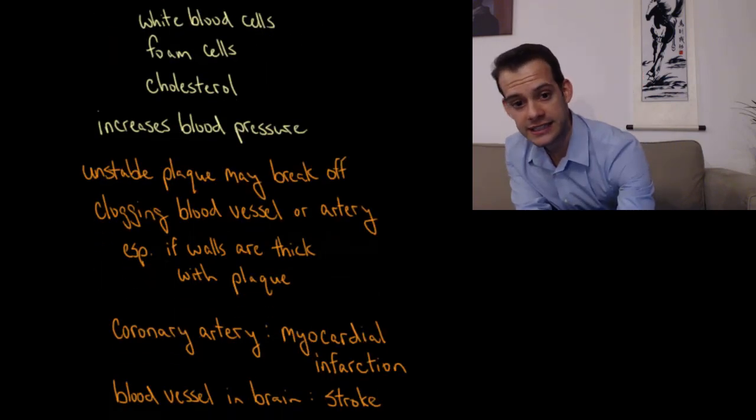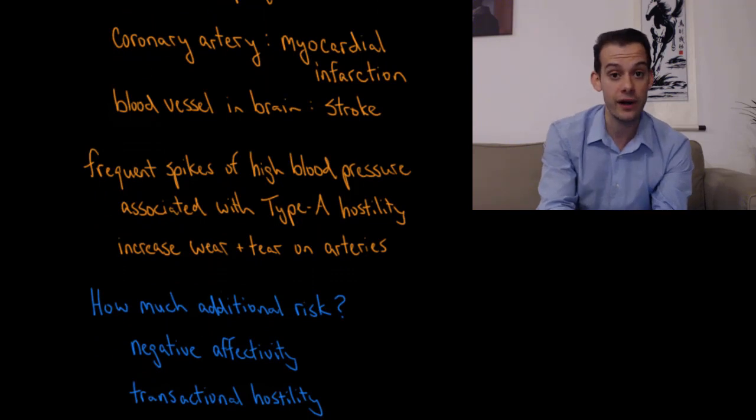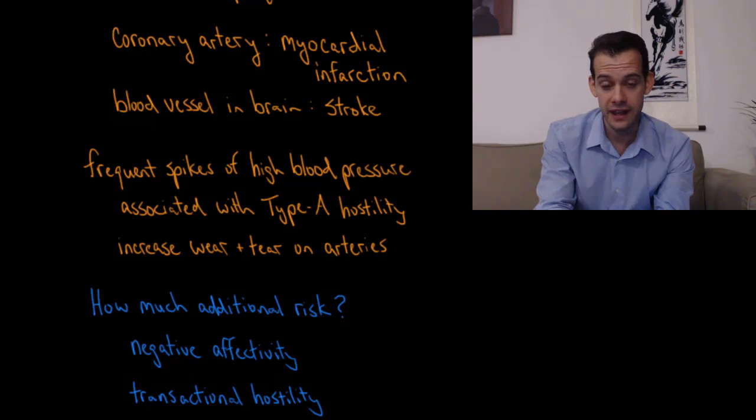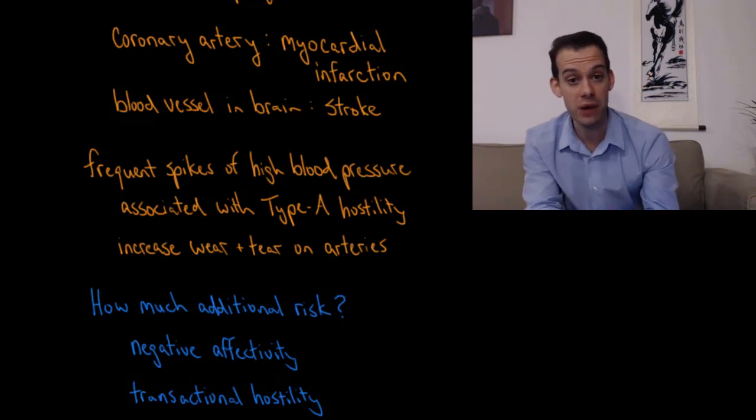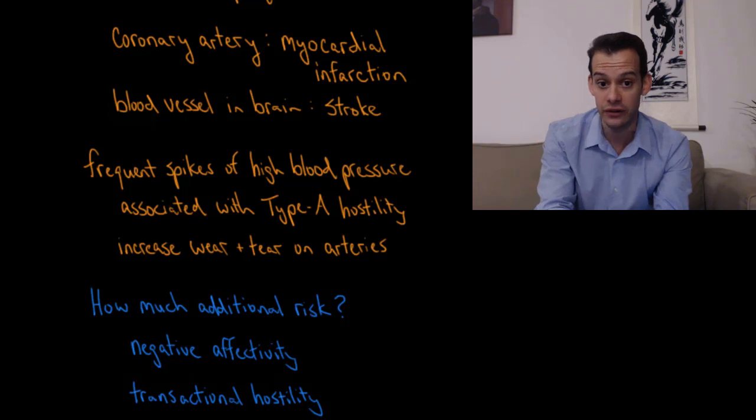And if this unstable bit of plaque gets stuck in the artery of a heart or a coronary artery, then you have a myocardial infarction, or a heart attack. And if it gets stuck in a blood vessel in the brain, then you have a stroke.